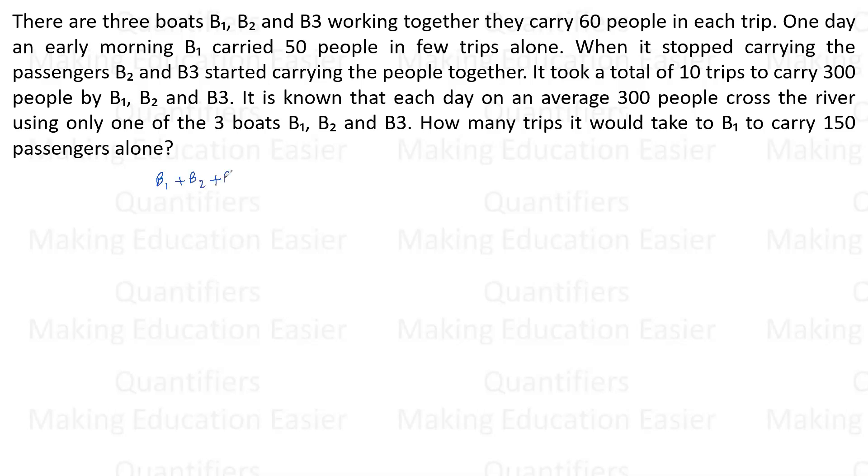So there are 60 people per round. This is their combined efficiency. This is the combined efficiency of three boats.